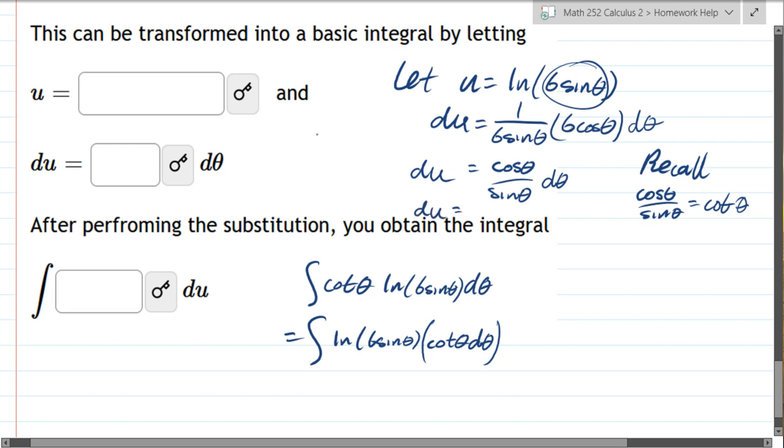Cotangent theta d theta. In the parentheses is just du. And what is outside? Well, that whole thing, ln six sine theta, all of that is u. So we got u du.